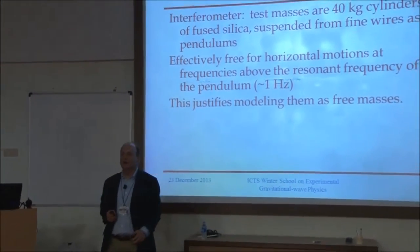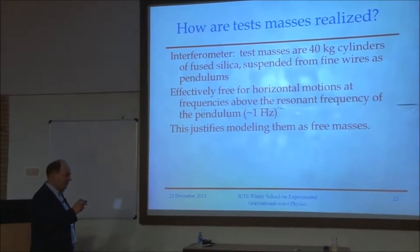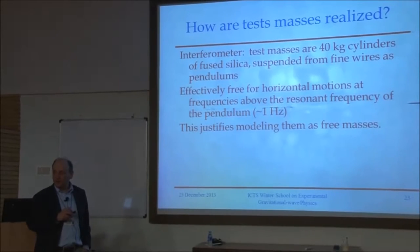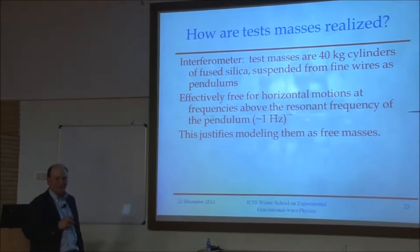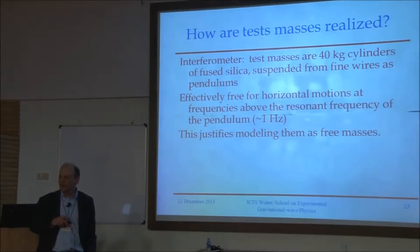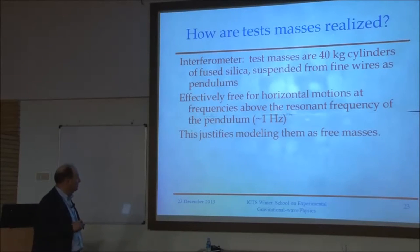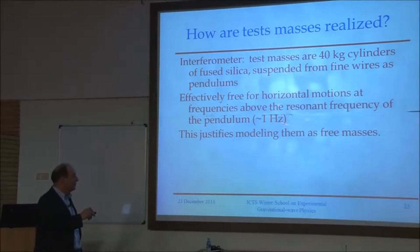In advanced LIGO, our test masses will be 40-kilogram mirrors made out of fused silica — and fused silica is amazingly good, as I'll keep telling you. Suspended from fine wires as pendulums — in advanced LIGO, those fine wires are actually fused silica fibers. For frequencies above the resonant frequency of the pendulum, it's as if the suspension had no effect on the interaction between the test mass and the gravitational wave. When I do my relativity, I know I'm not going to look at one hertz — we put the suspension resonant frequency down where the noise is terrible anyway, and then we never have to think about this.